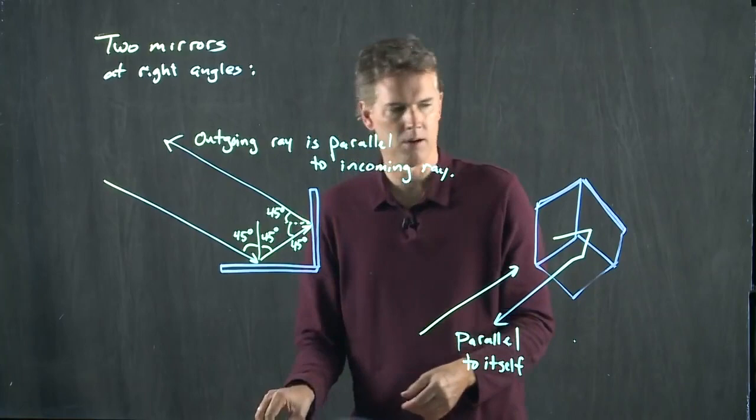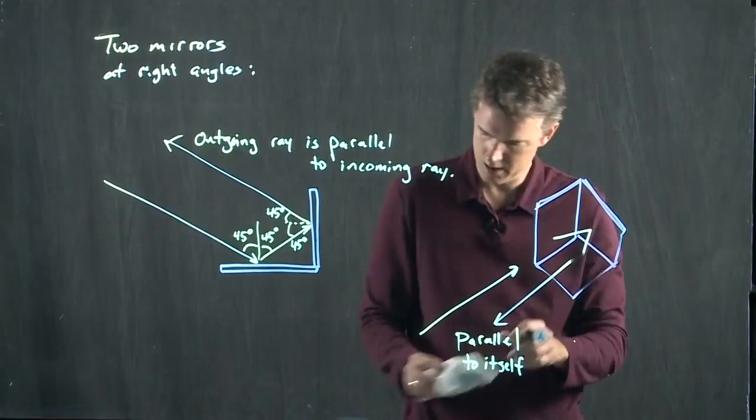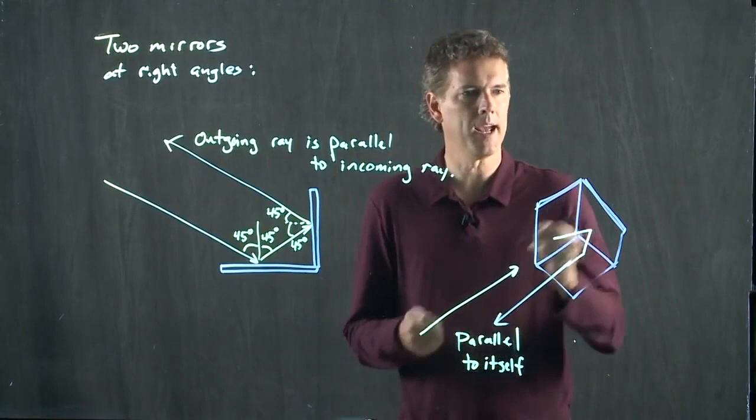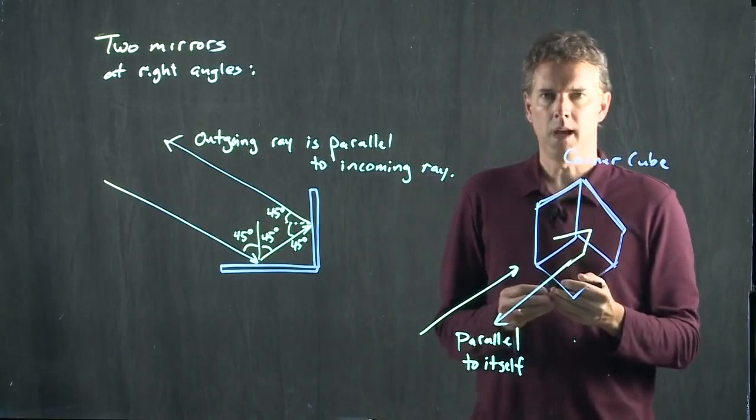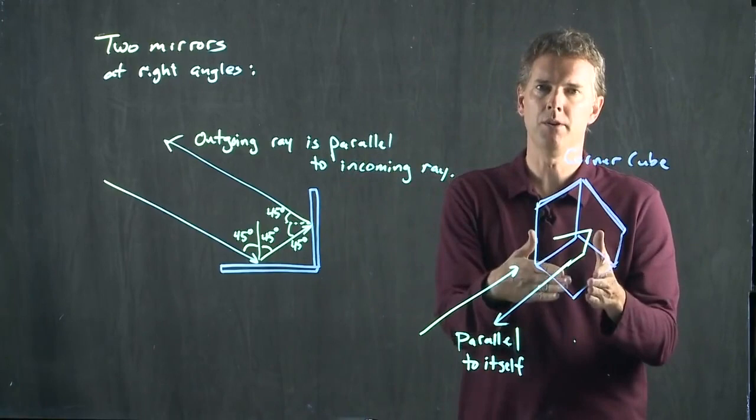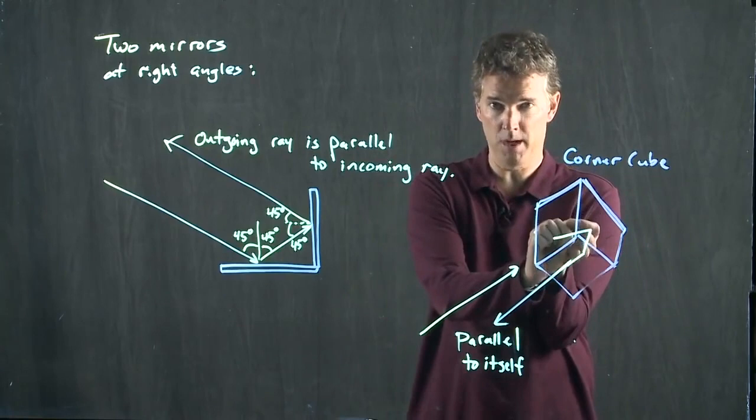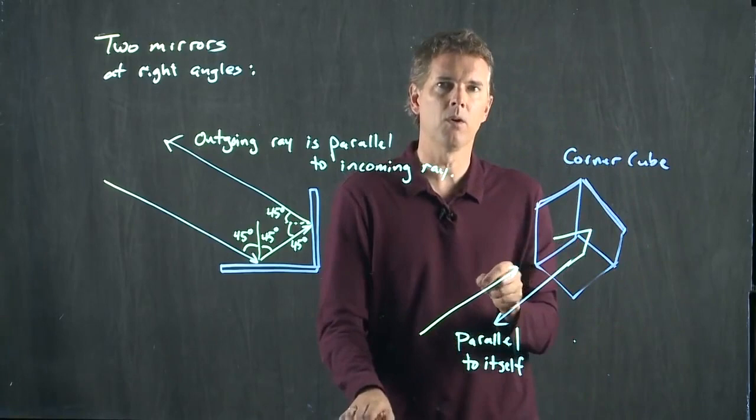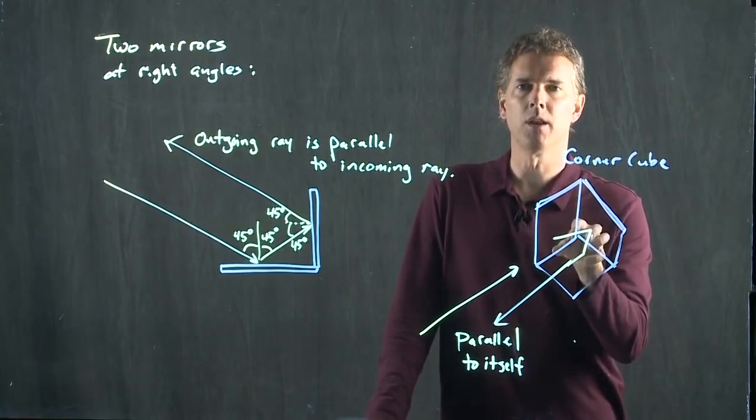And this thing is called a corner cube. This last ray took a little funny jog there. It's called a corner cube and it's used in physics quite a lot. But you are in fact familiar with this device. I can guarantee you that at some point today, you have come across a corner cube in your regular daily life. Where have you seen one of these things?